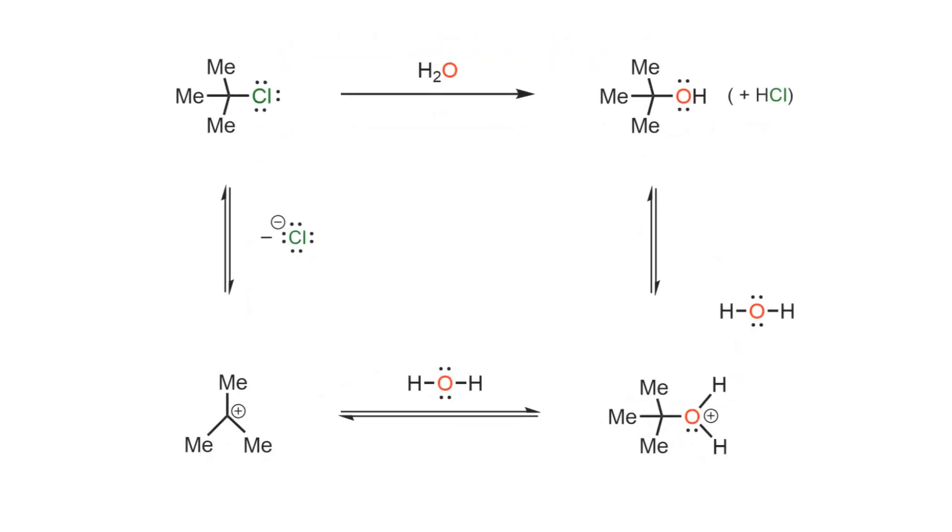To summarize the mechanism arrows, the protic solvent assists the leaving group breaking off from the substrate through hydrogen bonding. This leaves a tertiary carbocation which is stabilized by electron donation in the form of hyperconjugation.